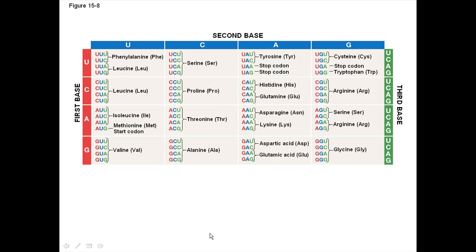For example, if you want to find out what the codon AAU encodes for, you look it up in this table and it says that AAU encodes for the amino acid asparagine. You can also see by looking at this table that each amino acid can be encoded for by more than one codon. For example, the amino acid leucine can be encoded by any one of four different codons. We'll see the significance of why multiple codons can encode for the same amino acid starting next week.